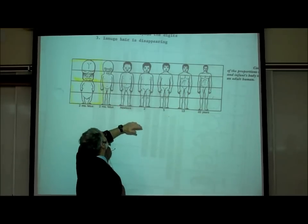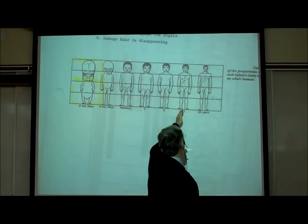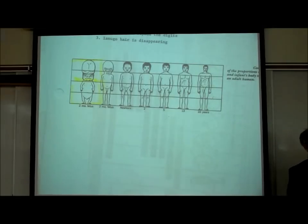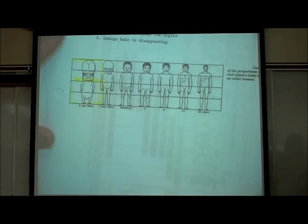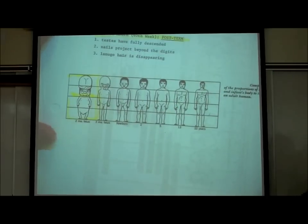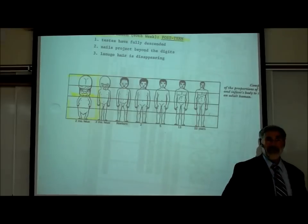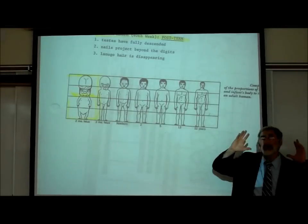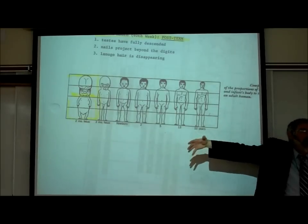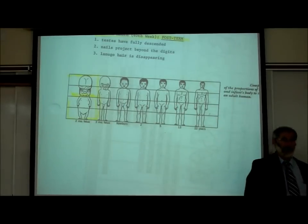By the tenth month, whether the baby has been born or not, things are still happening: the testes are fully descended, the nails need cutting, and the lanugo hair is falling off. Just because the baby has been born doesn't mean it's finished growing — it's just a little infant. The only reason a baby is born at this point is because it's getting too big to keep growing inside the mother.